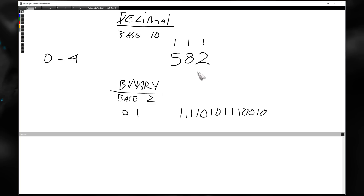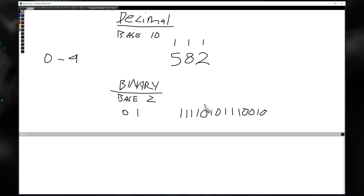So if you wanted to write 582 in binary, it would use a lot more symbols than you're used to seeing. To represent this in binary, you'd need a very long sequence. We walk around using decimal — that's just what we've done as a society. With hexadecimal, we use it as a way to more easily represent binary values.